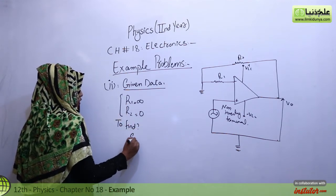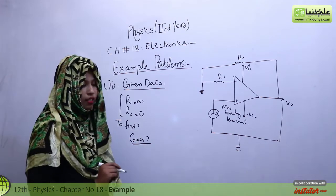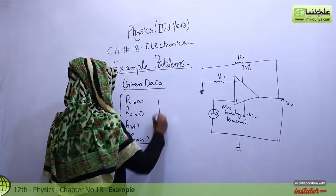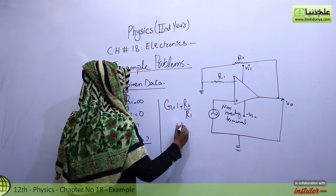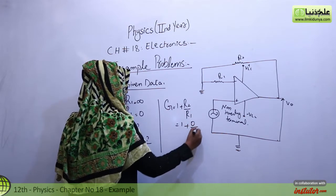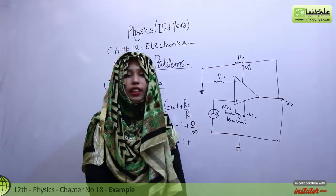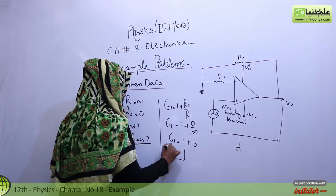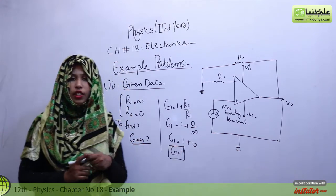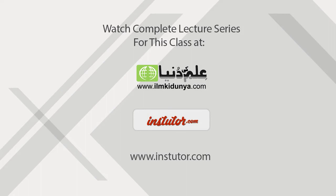And what we need to find? Find, we need to do gain. So gain ki value, the formula for finding G is: G is equivalent to 1 plus R2 over R1. So 1 plus R2 is 0 over infinity. 0 over something is always equivalent to 0. So gain humara 1 ke equivalent aajega. This is our example problem number 2. Thank you.